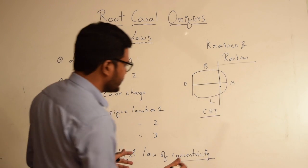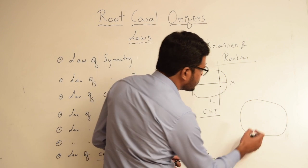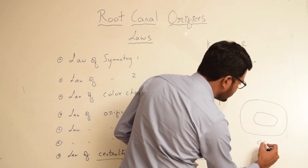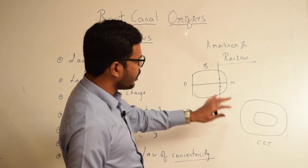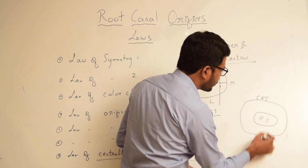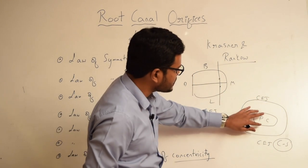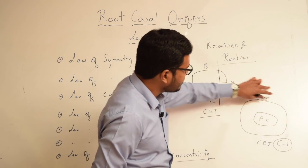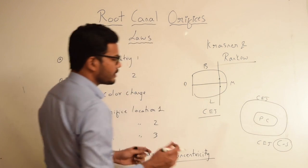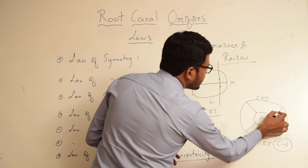Looking at diagrams: as per the Law of Centrality, in a cross section of the tooth at the level of CEJ, the pulp chamber is present more or less at the center. According to the Law of Concentricity, the walls of the pulp chamber are concentric to the external contour of the tooth at the level of CEJ.